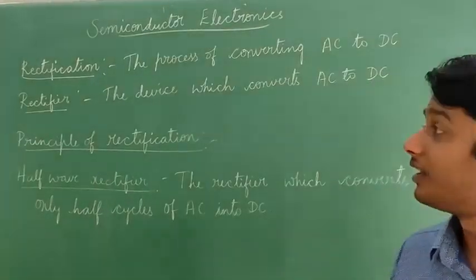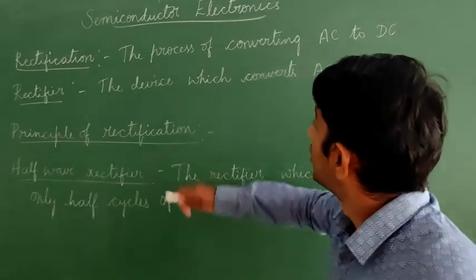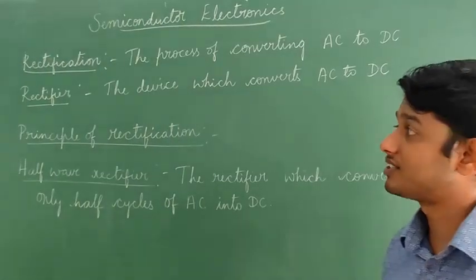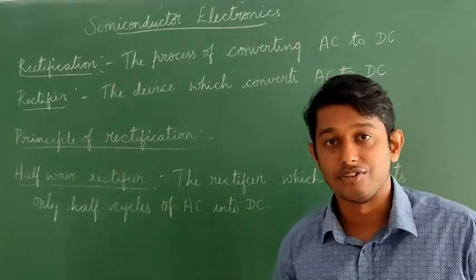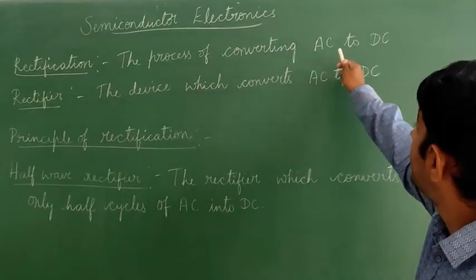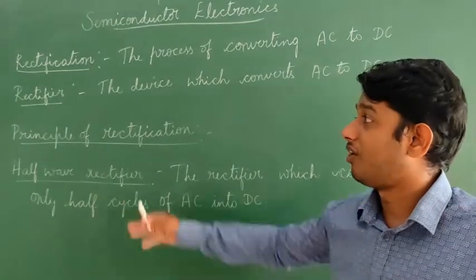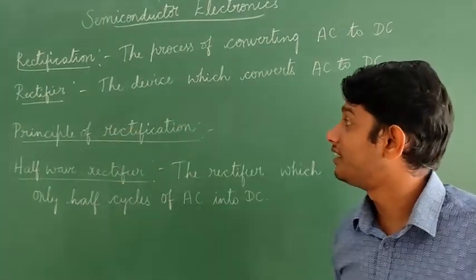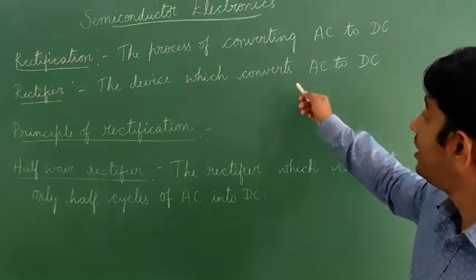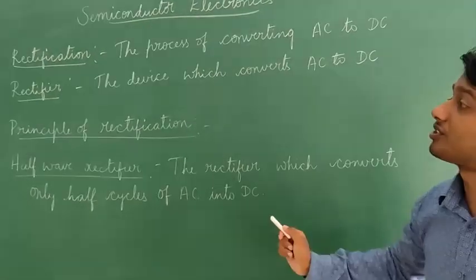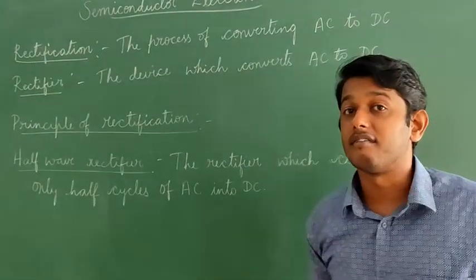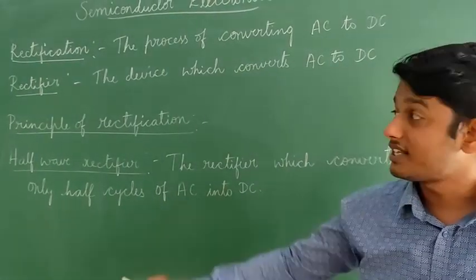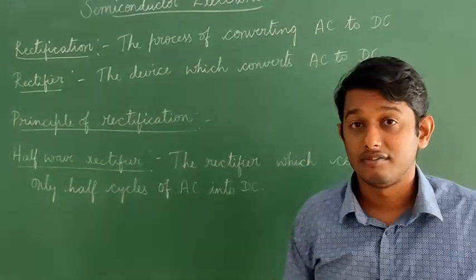The next topic is rectification. The process of converting AC to DC is called rectification. The device which converts AC to DC is called a rectifier.